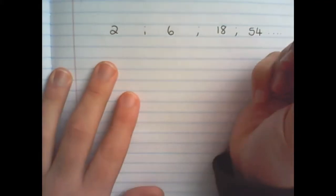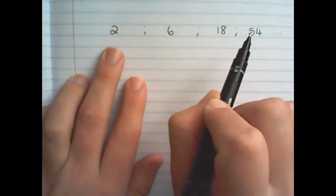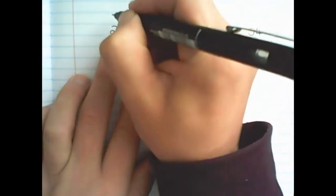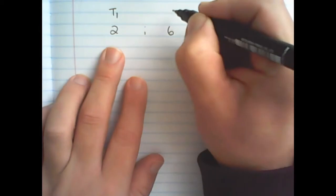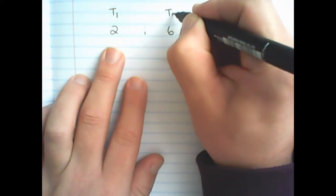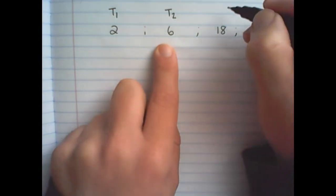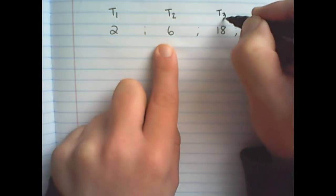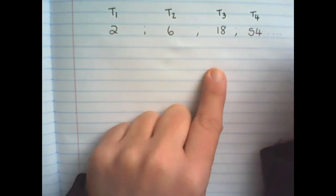In the previous lesson we named every position in the number pattern. So 2 would be called term 1, 6 would be called term 2, because it's the second term in the pattern, 18 would be term 3, and 54 term 4.